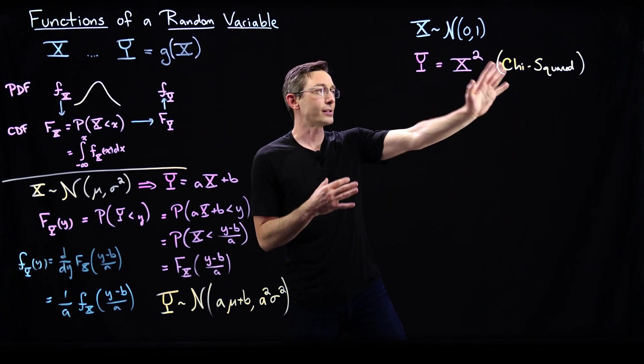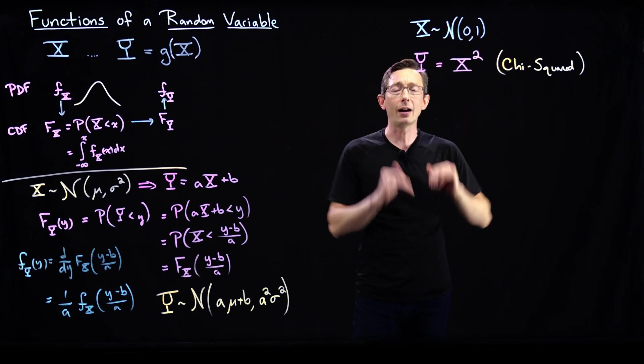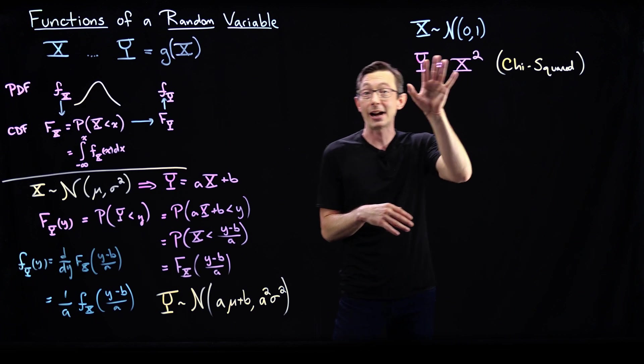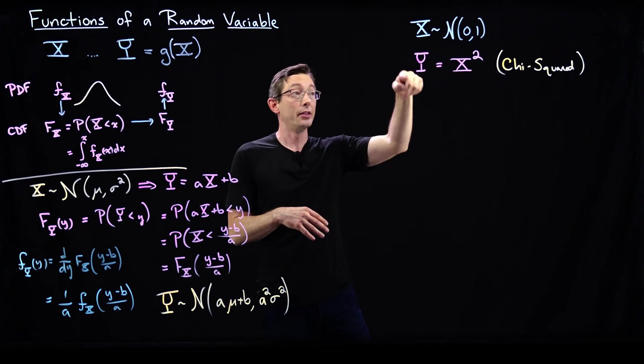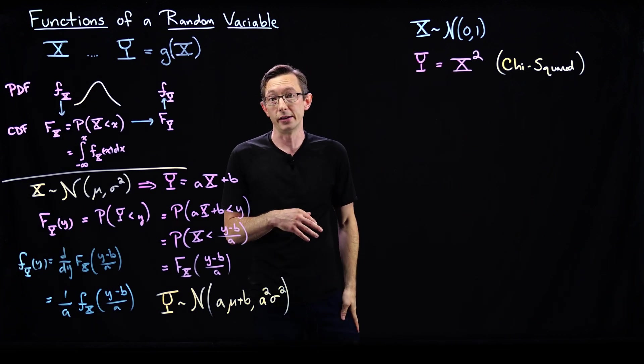Chi-squared is super useful for hypothesis testing, even if the distribution I think my data follows isn't normal. Even if it's a different distribution, I can still oftentimes use chi-squared. So that's enough preamble — now I'm just going to show you how to actually compute the PDF of this chi-squared distribution.